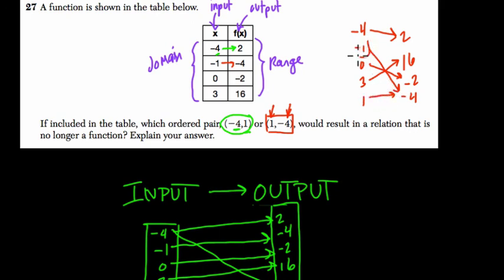And then 1 also maps to negative 4. So here, you can see that both negative 1 and 1 share the same output, but that's okay. As long as you can follow how the inputs travel to each of their own outputs, it is a function. But again, here, negative 4 maps out to two different outputs. It's not a function. Thanks.